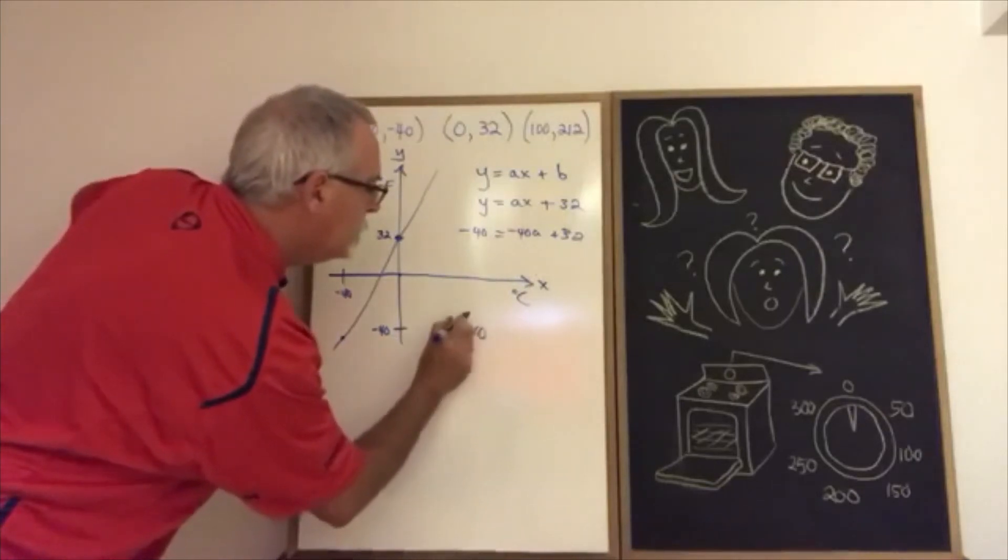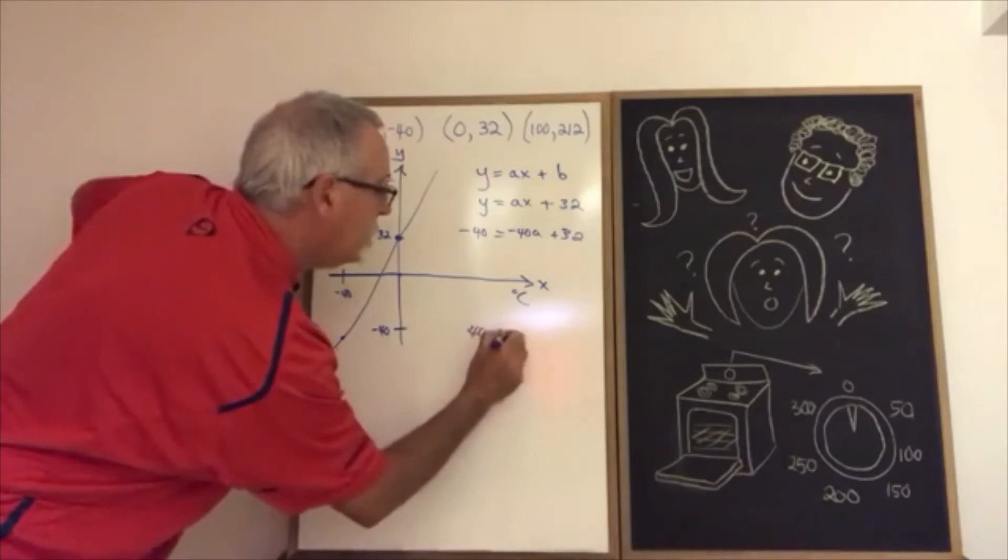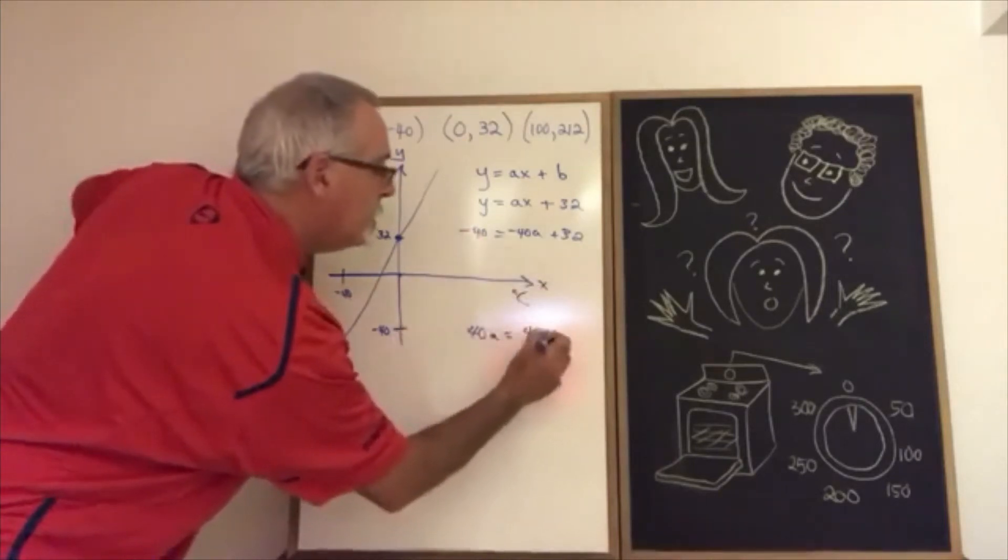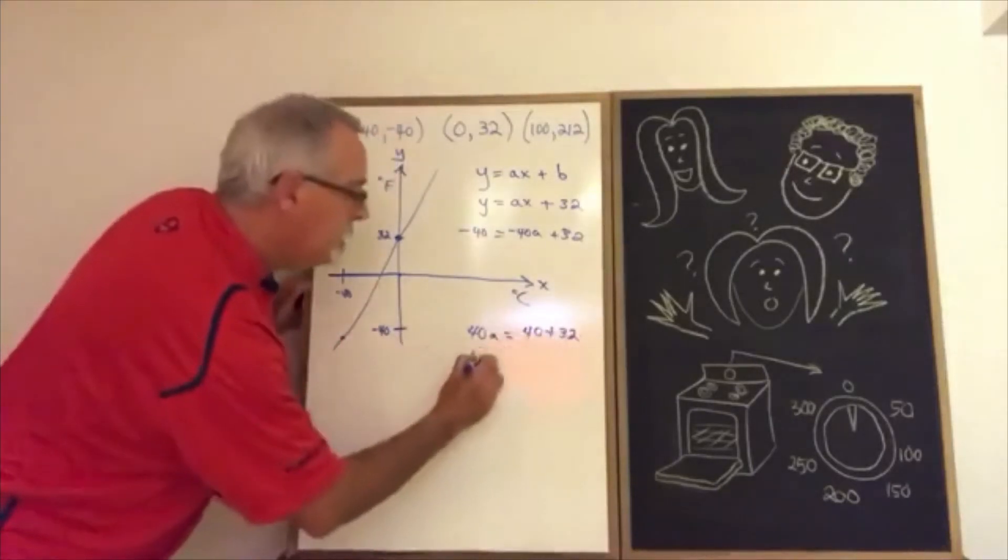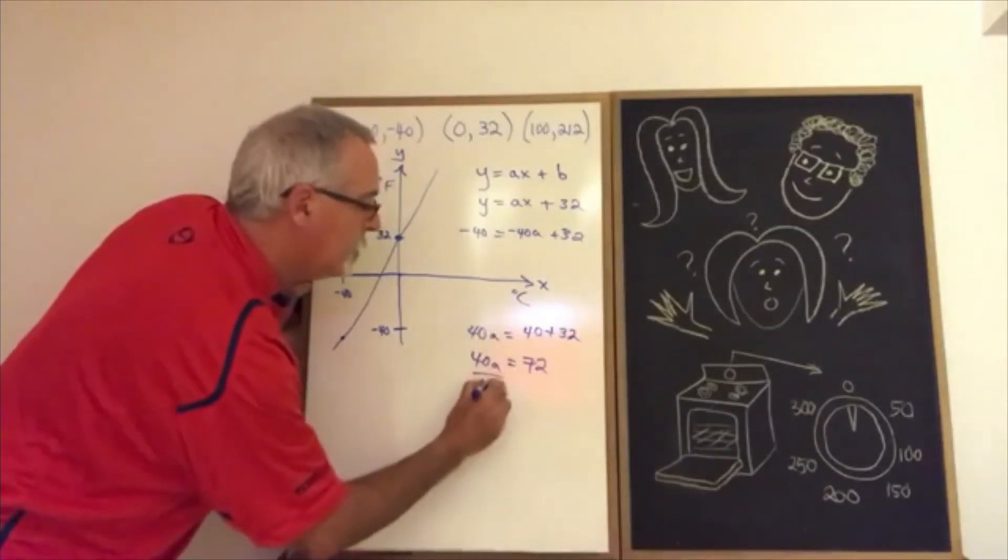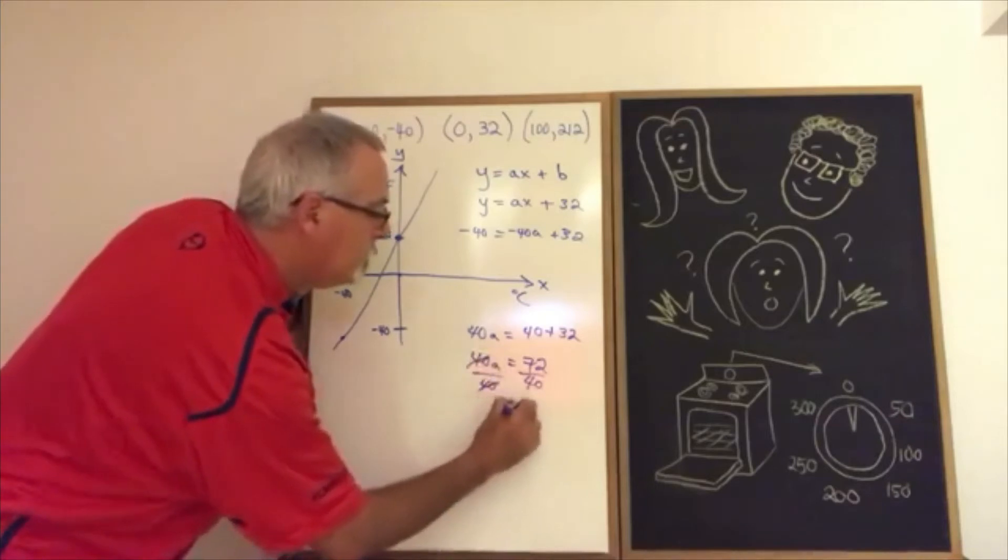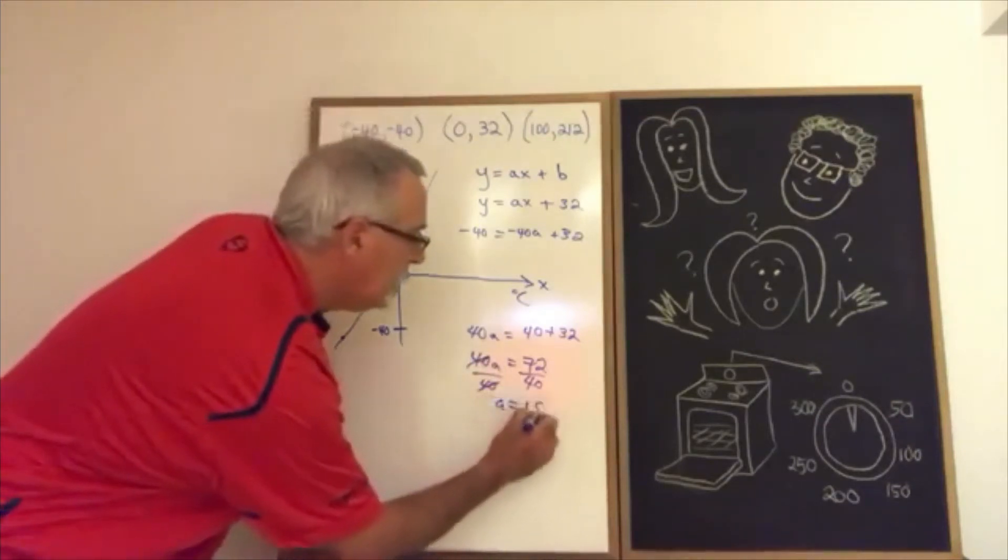Now we have to solve for a, and once we do that, we will know our y equals ax plus b equation. First, I'm going to move the minus 48 to the left - sorry, that means it becomes positive. 40a. I'm going to move the minus 40 to the right - it'll become positive 40. That gets rid of the negative signs. I get 40a equals 72. I divide both sides by 40. a is equal to whatever 72 over 40 is, which happens to be 1.8.